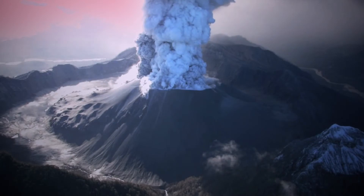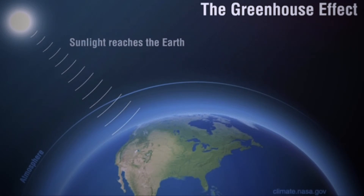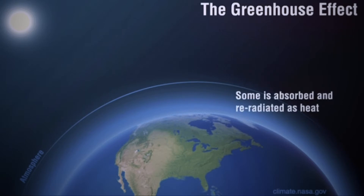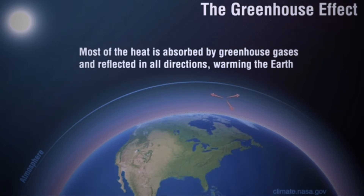The greenhouse effect is the process by which radiation from a planet's atmosphere warms the planet's surface to a temperature above what it would be without its atmosphere. Earth's natural greenhouse effect is critical to supporting life and initially was a precursor to life moving out of the ocean onto land.